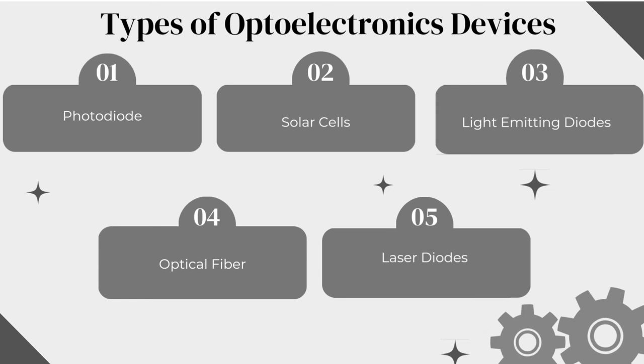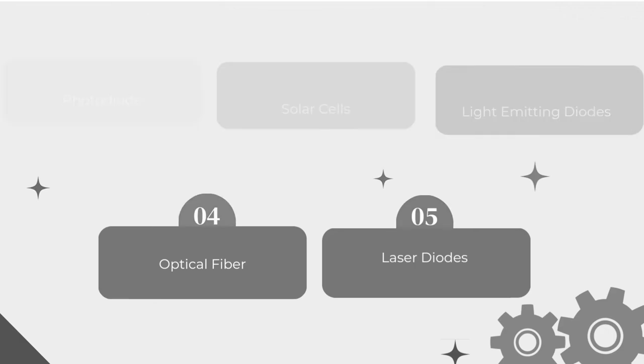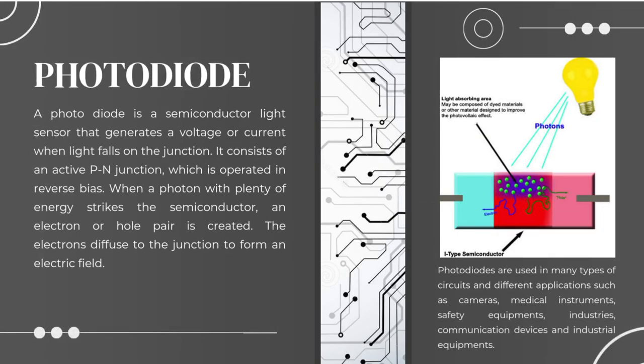Types of optoelectronics devices: 1. Photodiode, 2. Solar cells, 3. Light emitting diodes, 4. Optical fiber, 5. Laser diodes. A photodiode is a semiconductor light sensor that generates a voltage or current when light falls on the junction. It consists of an active p-n junction operated in reverse bias. When a photon with sufficient energy strikes the semiconductor, an electron-hole pair is created. The electrons diffuse to the junction to form an electric field. Photodiodes are used in cameras, medical instruments, safety equipment, industries, communication devices, and industrial equipment.